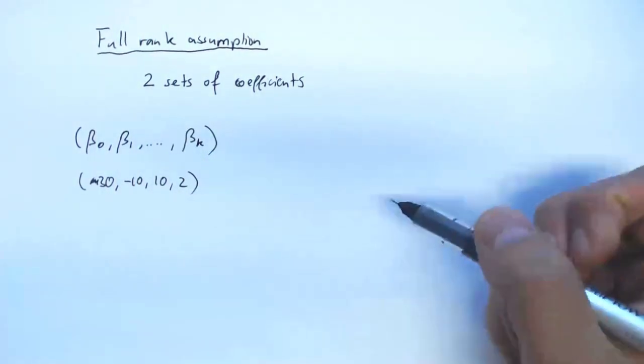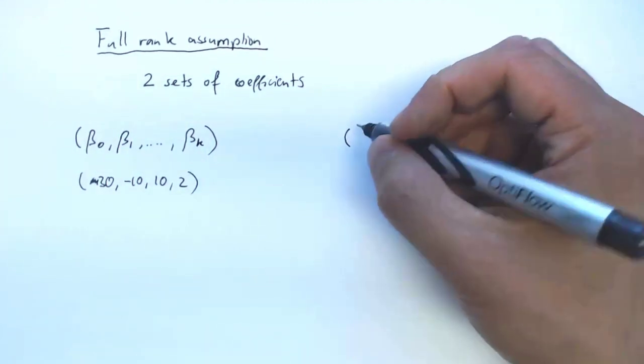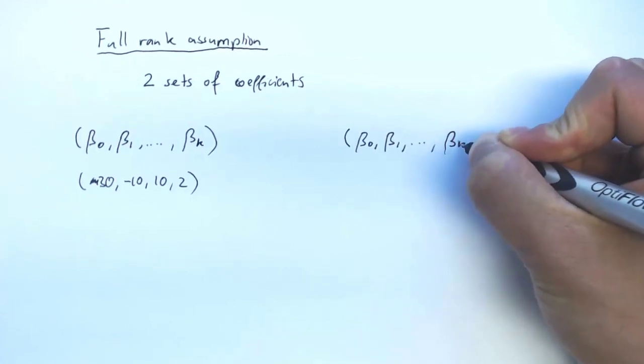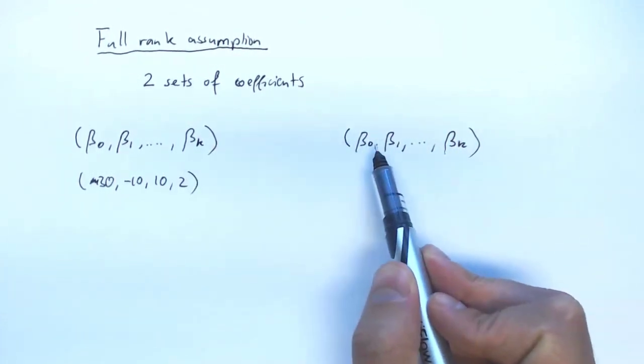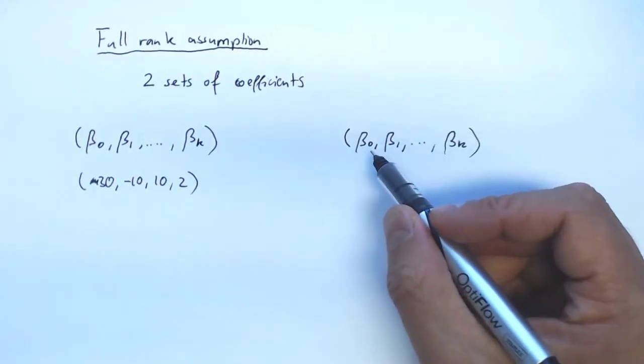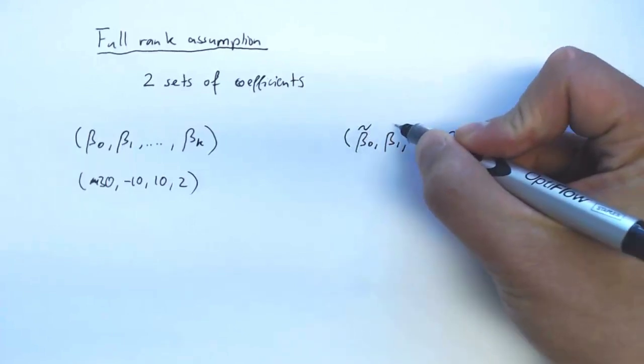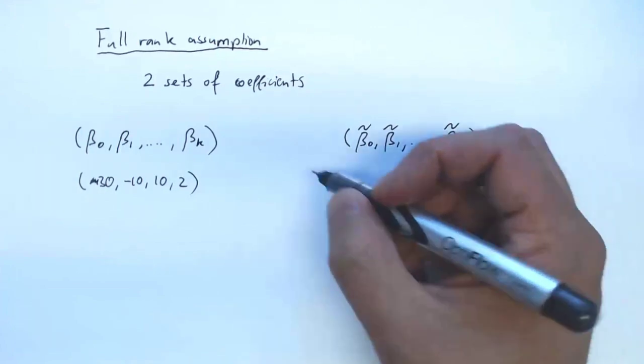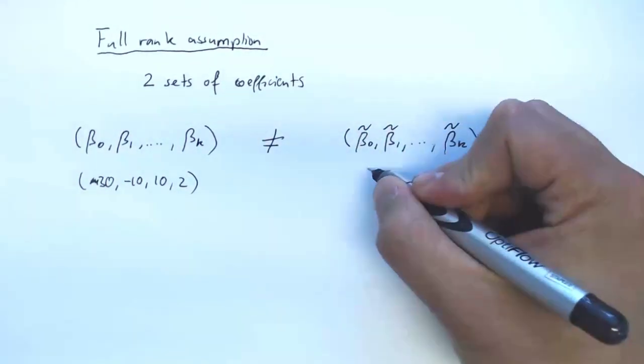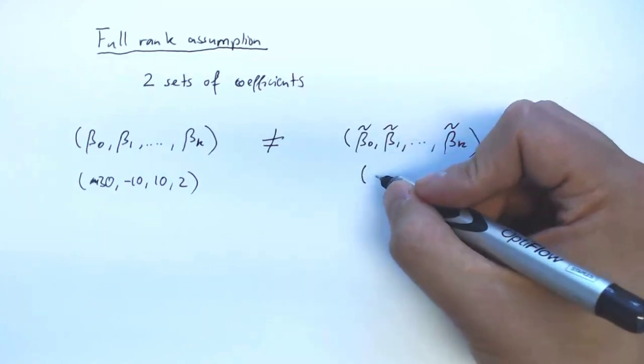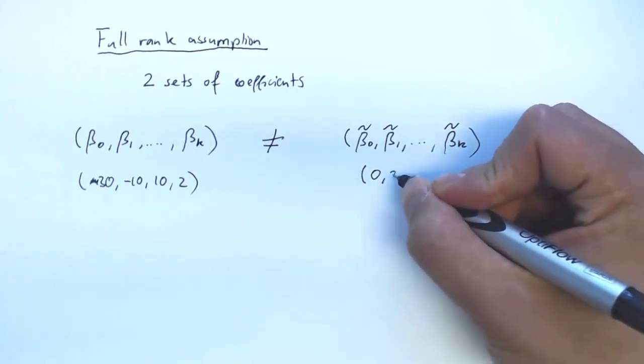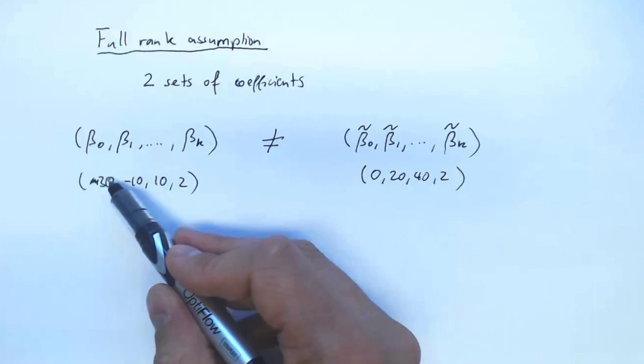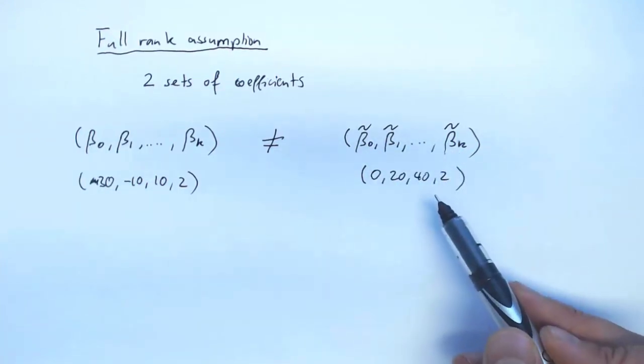We have these coefficients and then we have a different set of coefficients. But these are supposed to be different from each other, representing different numerical values. So I better also give them different names. I'll just put tildes on this set of coefficients, and they are not the same. In our dummy variable trap example, the numbers here were 0, 20, 40, 2. So while the 2 is the same on both sides, the other coefficients are different, so the whole set of coefficients are different.